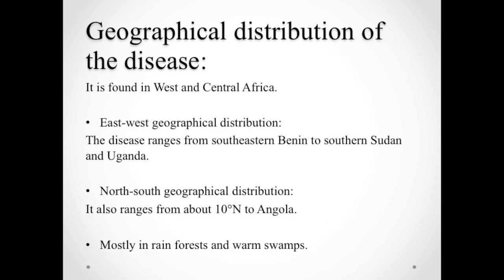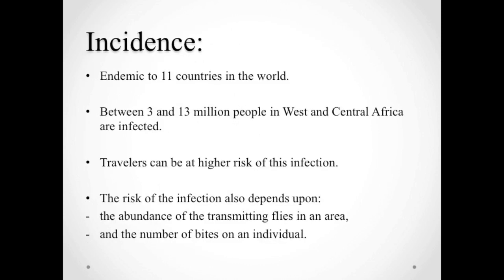Loa loa filariasis is mostly found in West and Central Africa. The disease ranges from southeastern Gabon to southern Sudan and Uganda, and also extends from about 10 degrees north to Angola. It is highly concentrated in rain forest and warm swamp regions. Loa loa filariasis is known to be endemic to 11 countries in the world.